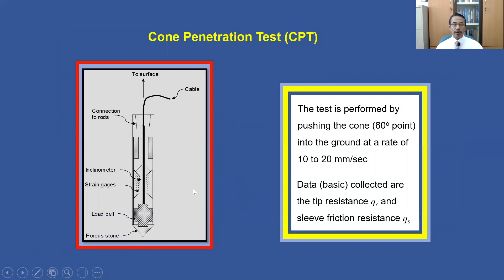Basically, there are two types of data collected to estimate soil properties: tip resistance and sleeve resistance. To perform this CPT, no borehole is required — it is simply pushed into the ground. The data are collected continuously, unlike in soil boring where standard penetration tests are performed only at selected depths.